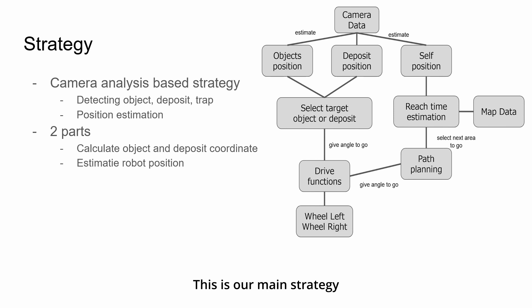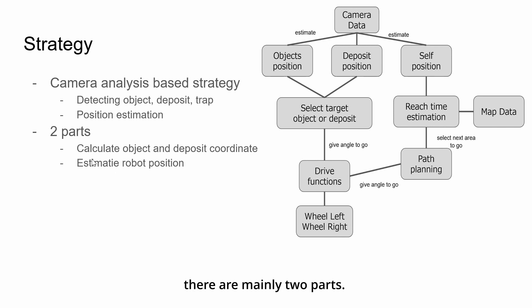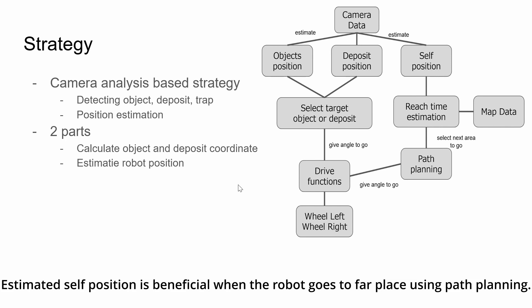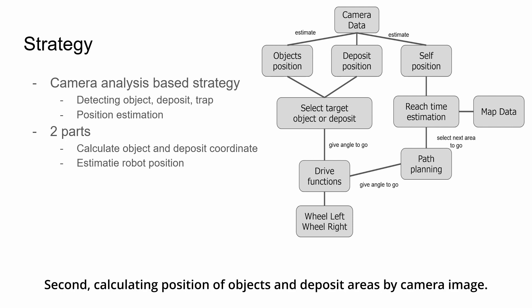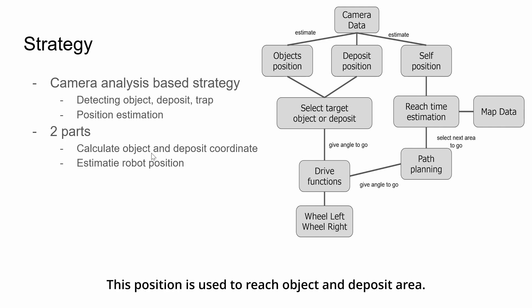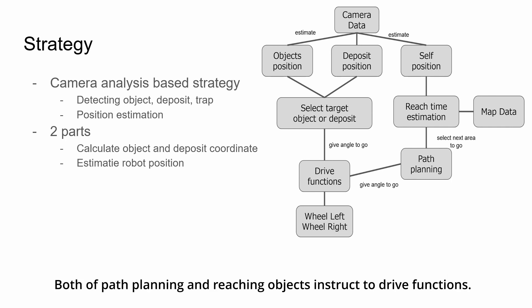This is our main strategy. All of our strategy starts from camera analysis. There are mainly two parts. First, estimating self-position by camera image — estimated self-position is beneficial when the robot goes to a far place using path planning. Second, calculating the position of objects and deposit areas by camera image. This calculated position is used to reach objects and deposit areas.